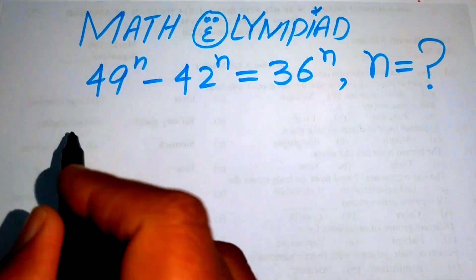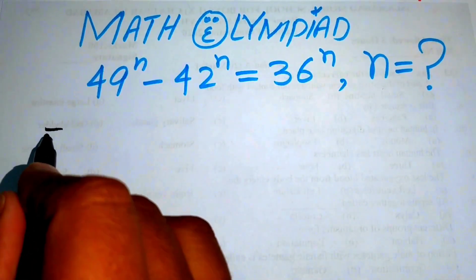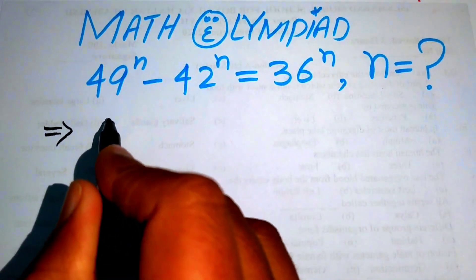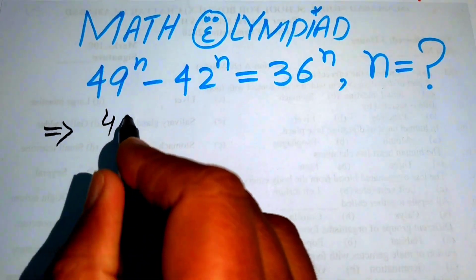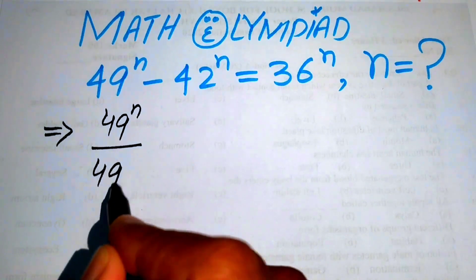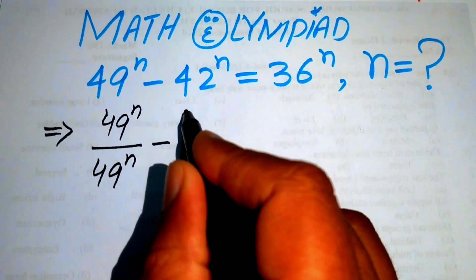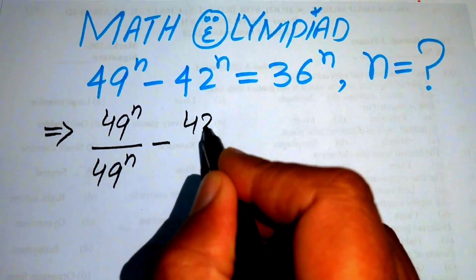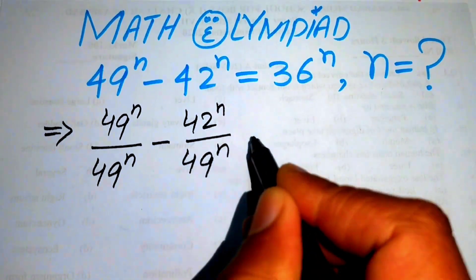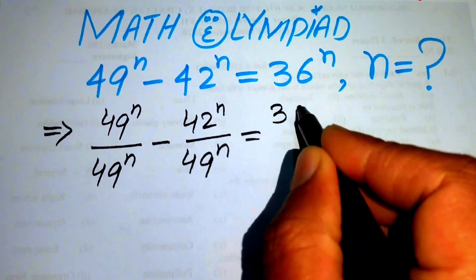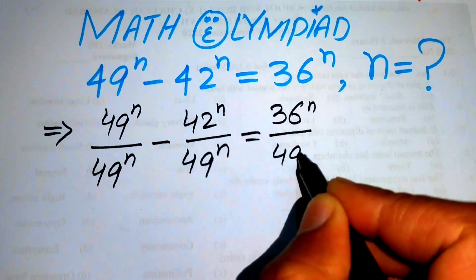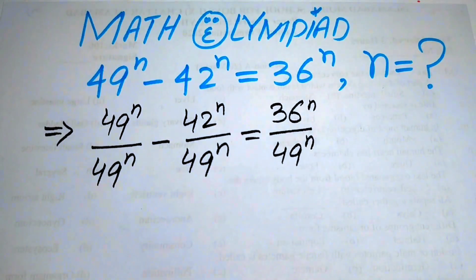The very first step is to divide both sides by 49 to the power of n. This gives us 49^n over 49^n minus 42^n over 49^n equals 36^n over 49^n.